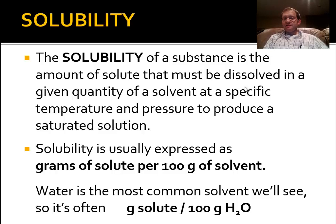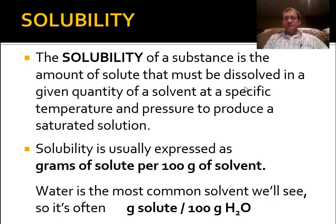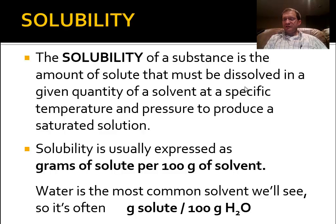Solubility is usually expressed in terms of how many grams of solute can be dissolved per 100 grams of solvent — grams per 100, which is essentially a percentage. When we talk about solubility we often describe it as a percent solution, expressed as grams of solute per 100 grams of solvent. Since water is the most common solvent in chemistry, you'll often see it as grams of solute per 100 grams of water.